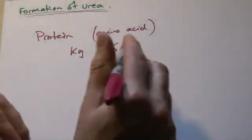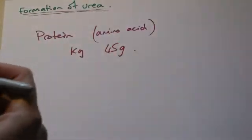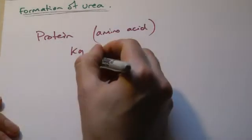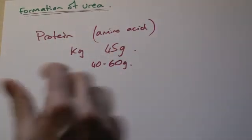So somebody who weighs 90 kilograms would probably need about 45 grams of protein a day, very roughly speaking, assuming that you're not doing something like bodybuilding, in which case obviously you need quite a bit more. But the value given in the book is somewhere between 40 and 60 grams per day depending on the individual.